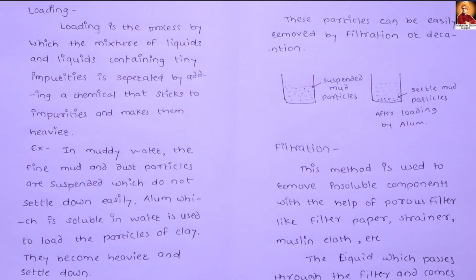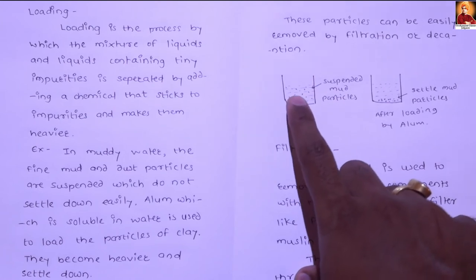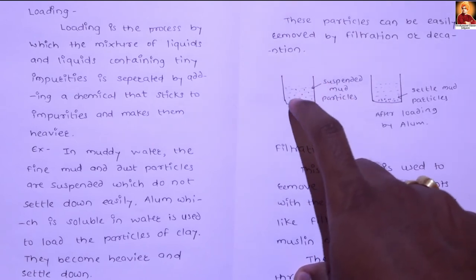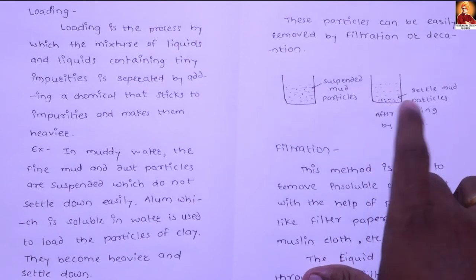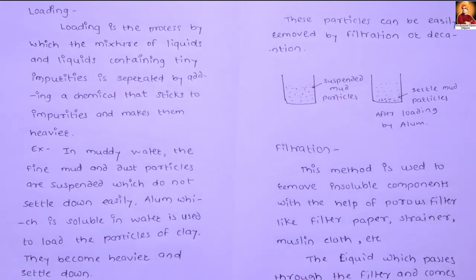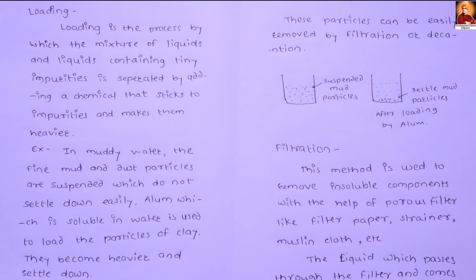After loading by alum, the particles settle down. Then we use filtration. Filtration is the method used to remove insoluble components with the help of a porous filter like filter paper, strainer, or muslin cloth.